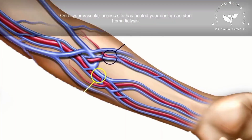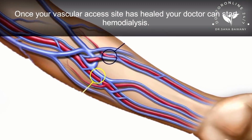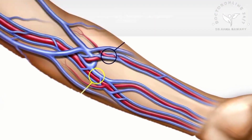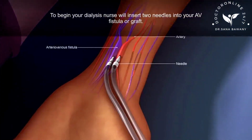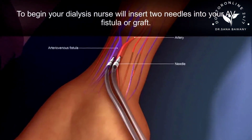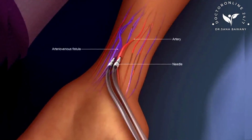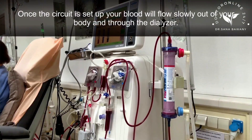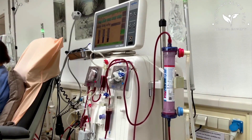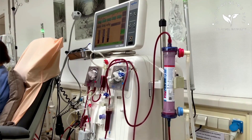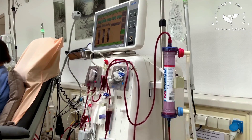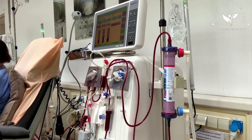Once your vascular access site has healed, your doctor can start hemodialysis. Your dialysis nurse will insert two needles into your AV fistula or graft. Once the circuit is set up, your blood will flow slowly out of your body and through the dialyzer.